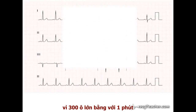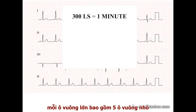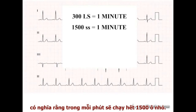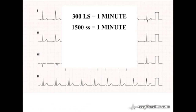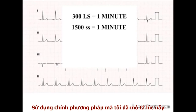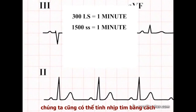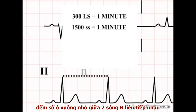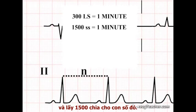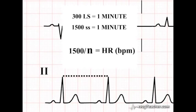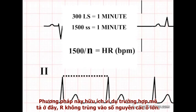As 300 large squares equates to 1 minute, and as there are 5 small squares in each large square, 1500 small squares also equates to 1 minute. Using exactly the same logic, we can also calculate the heart rate by counting the number of small squares between two consecutive R waves and dividing this number into 1500. This is useful when, as illustrated on this ECG, the R waves do not fall on a set number of large squares.